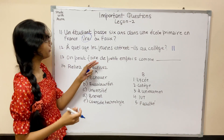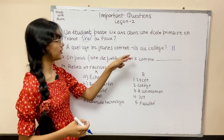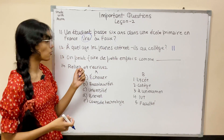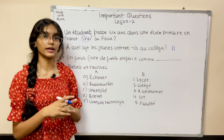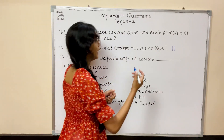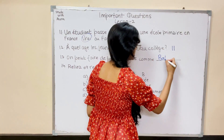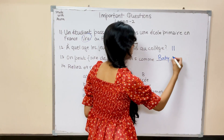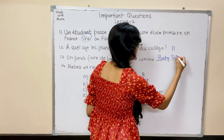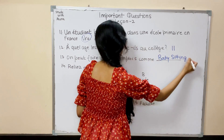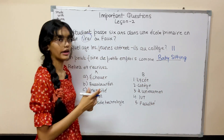Question 13: On peut faire des petits emplois comme — we can do small part-time jobs like? You can write babysitting or working in a supermarket, whatever you like.